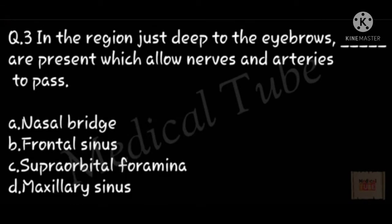Third number question: in the region just deep to the eyebrows, structures are present which allow nerves and arteries to pass. Correct answer is C, supraorbital foramina.